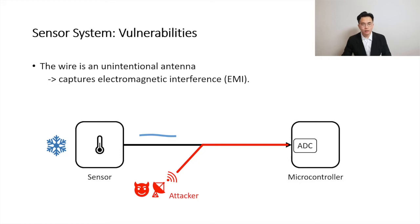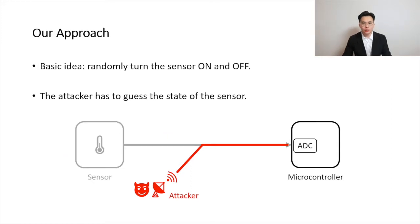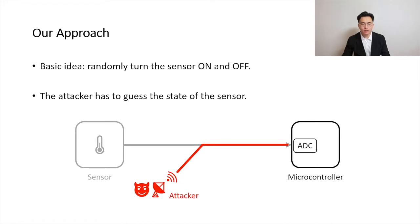Therefore, it is essential for the system to have the capability of detecting attacks. The basic idea is: when the sensor is off, the microcontroller should not receive any sensor measurement. However, if an attack happens, the microcontroller will receive a measurement, and this indicates an attack. So if we randomly turn the sensor on and off, the attacker is forced to guess the state of the sensor. In order to bypass the detection, the attacker must not affect the sensor output when the sensor is off. If the attacker makes a wrong guess, she will be detected.